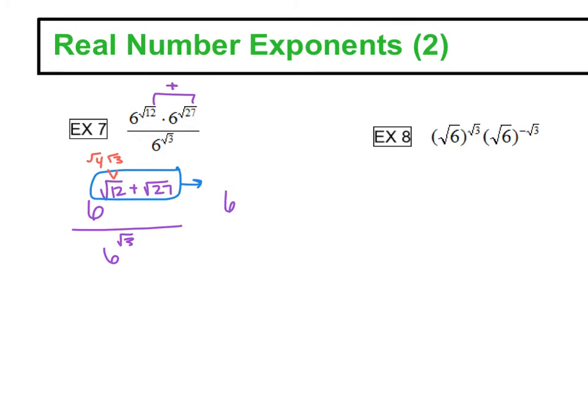So I'm going to leave the 6, square root of 4 is 2, square root of 3 plus, now 27 can be broken down into 9 and 3. So our square root of 9 is 3, and that square root of 3 stays. This is still all over 6 square root of 3.